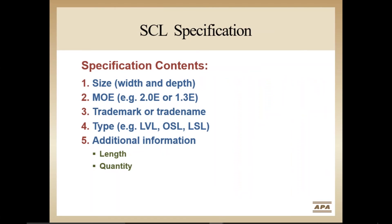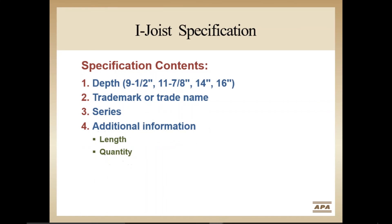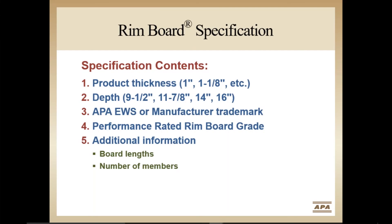In the next few slides, we'll look at the information needed to correctly specify engineered wood products. For SCL products, specify the size, grade, trademark or trade name, and type. Add other specifics as desired. Similarly, with rim board, specify the product thickness, the depth, the manufacturer trade name and type, and any additional information such as member lengths and quantities.